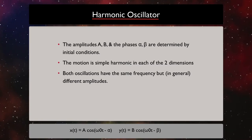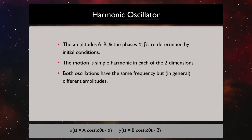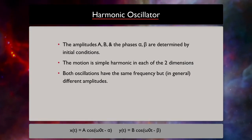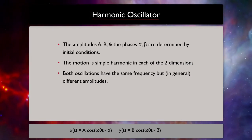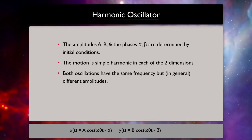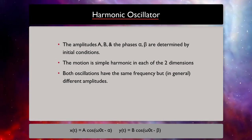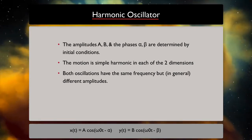Now, if we solve the equations which model particle motion under the force, then we can see that the motion is simple harmonics in each of the two dimensions. And both of these oscillations have the same frequency, but in general they have different amplitudes. The amplitudes are denoted by A and B, and the phases denoted by α and β are determined by initial conditions.